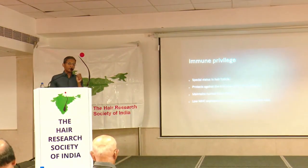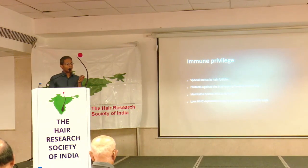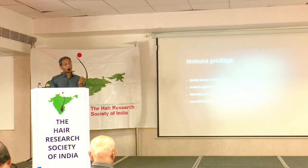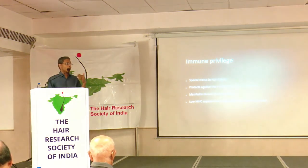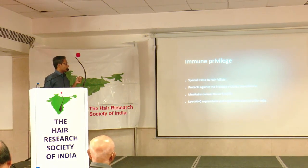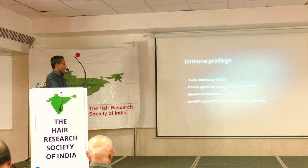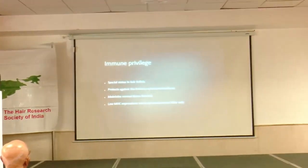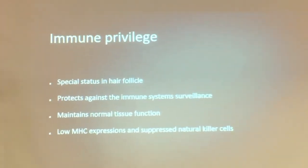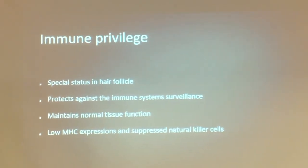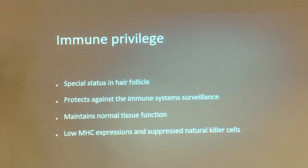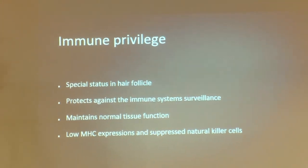What we need to understand specifically is immune privilege. There are immune privilege areas in the body of which hairs and skin are part. That's why we have no immunity against normal hair and normal skin. This occurs because of two factors: there is very low MHC — major histocompatibility complex — expression, and there are suppressed natural killer cells. We need our immune system to protect us from infection and cancers, but we don't want it to attack our own cells. Immune privilege maintains normal tissue function while also preventing external threats and cancers.